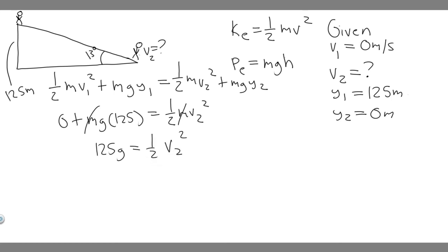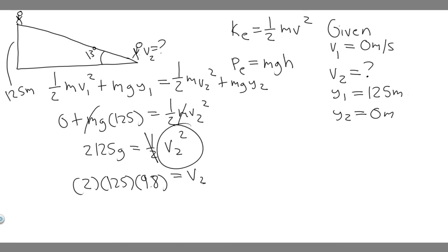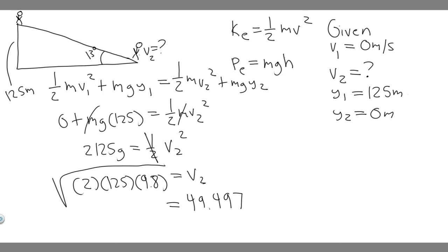Multiply both sides by two: two times 125 times g equals v₂ squared. Plugging in g equals 9.8, then square-rooting both sides, v₂ equals the square root of two times 9.8 times 125. Going ahead and computing that gives 49.497. You can round this however you want — to a whole number or about 49.5. Velocity is in meters per second.